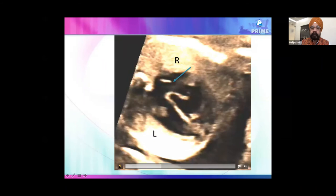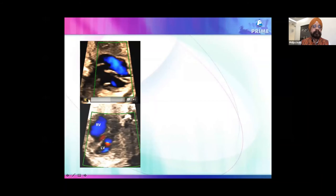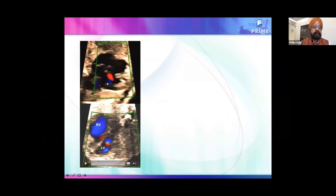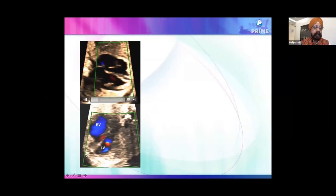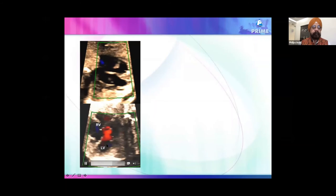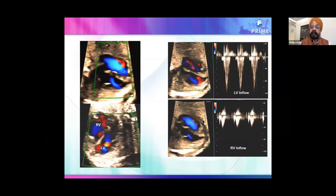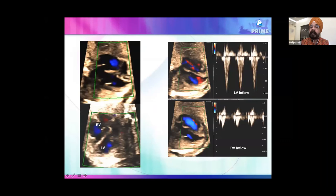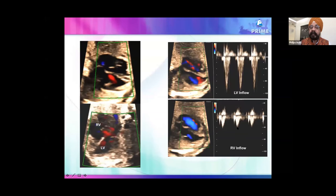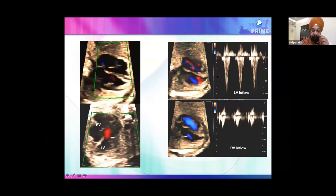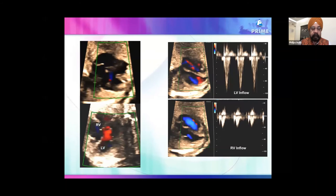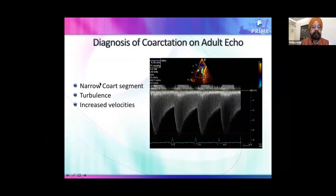On color Doppler, flows in LV and RV looked okay. But by reducing the Nyquist limit, aliasing appeared in the LV inflow signals — suggesting mitral stenosis — with LV inflow velocity still less than 1 meter/second, while RV flows were only 40 cm/s. This was a case of mitral stenosis associated with Gaucher's disease, which is a known association in the literature.